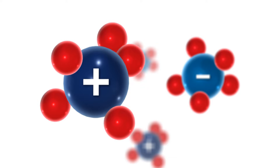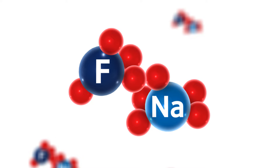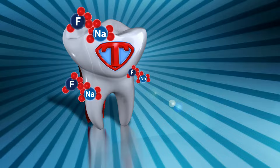An ion is a positively or negatively charged atom that helps elements combine with each other. Fluoride is a negatively charged ion that doesn't normally exist by itself. Instead, it combines with positively charged ions like sodium to make some of the ingredients that are found in your toothpaste.